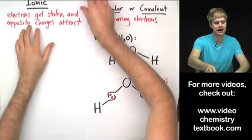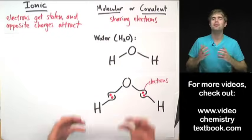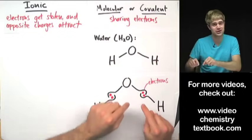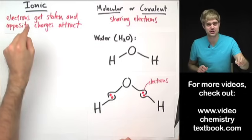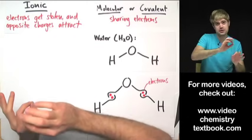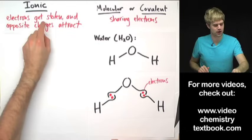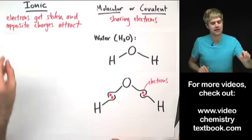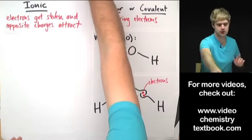Now on the other hand, in ionic compounds, the atoms aren't being so nice to each other. They're not sharing. The atoms stick together in an ionic compound because one atom steals another atom's electrons. So electrons get stolen and then opposite charges attract. Let me show you what I mean.